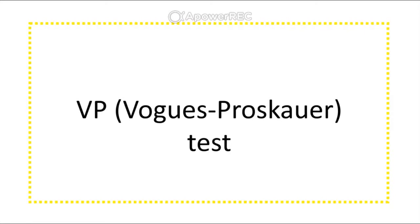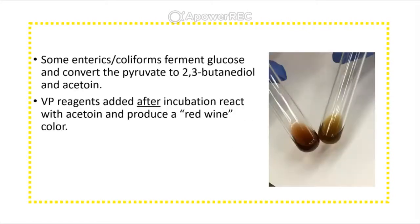The Voges-Proskauer test: some enteric bacteria (coliforms) can ferment glucose and convert pyruvate into 2,3-butanediol and acetoin — similar to how other organisms convert pyruvate into ethanol or lactic acid. The VP test adds a reagent after incubation; if 2,3-butanediol and acetoin are present, the medium turns a red-wine color.